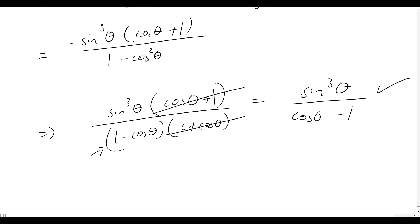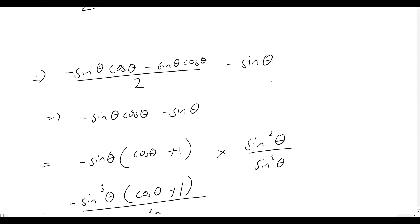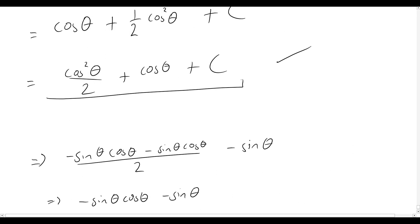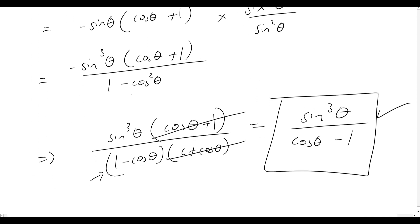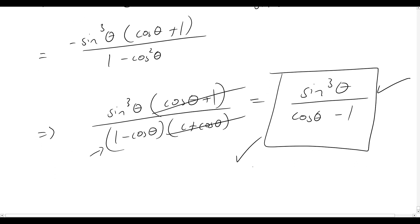So we've gone from integrating this function to finding that the solution is cos squared theta over 2 plus cos theta plus C, and then differentiated it back to confirm it is correct. If you enjoyed this video or found it useful, please leave a like, subscribe, and comment — I really do appreciate it. I hope you all have a lovely day, and as always, stay curious.